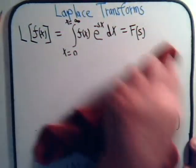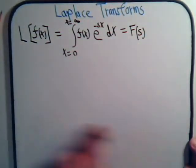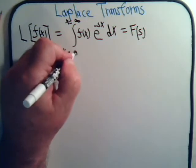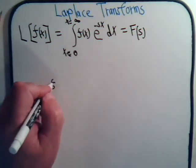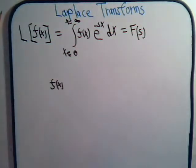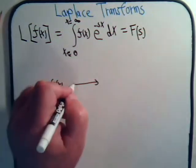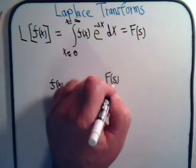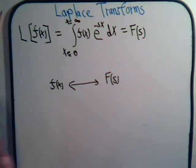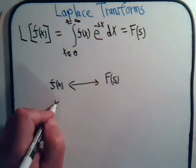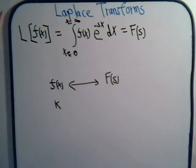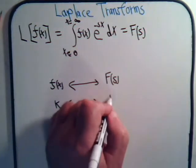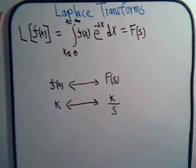In general, we'll organize it like this. We have a function f of x, and then its corresponding Laplace Transform, which is some function F of s. Here, so far, all we've done is taken a constant k, and its corresponding Laplace Transform is k divided by s.